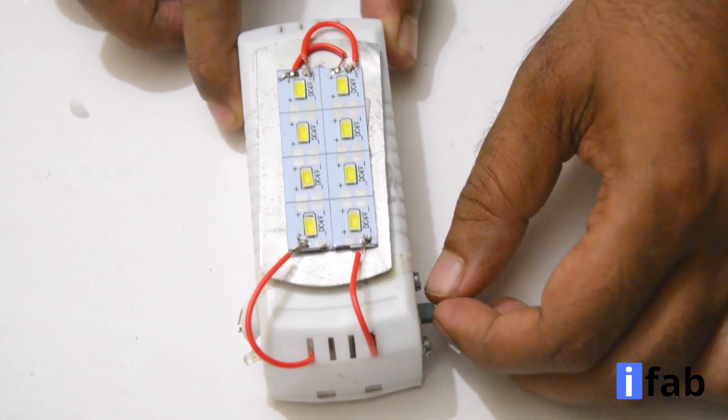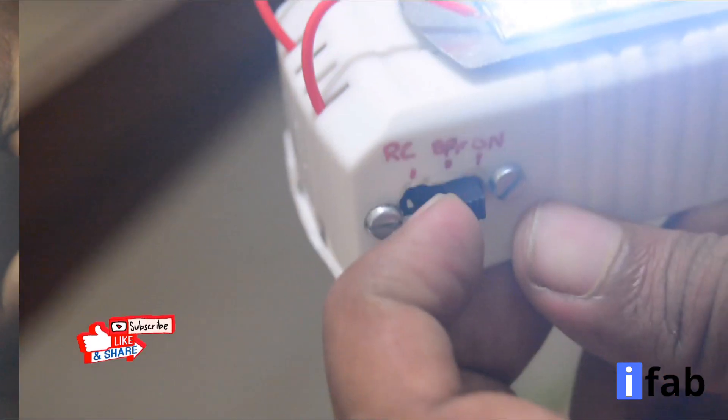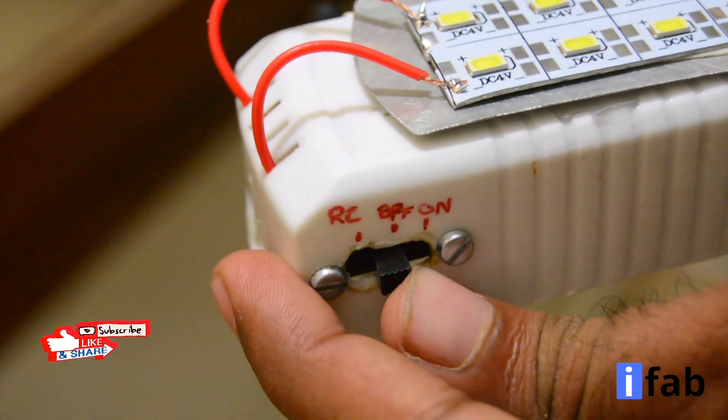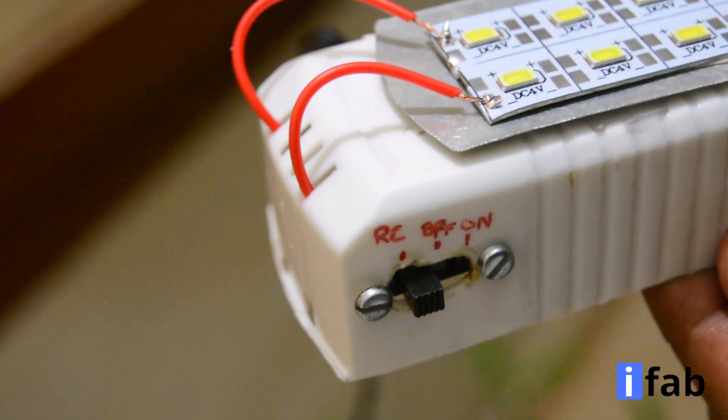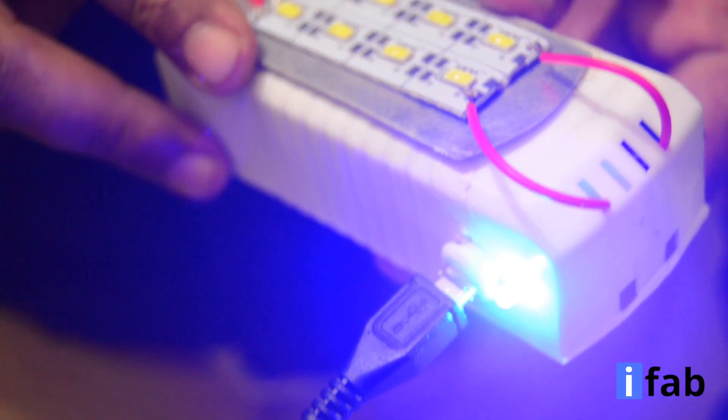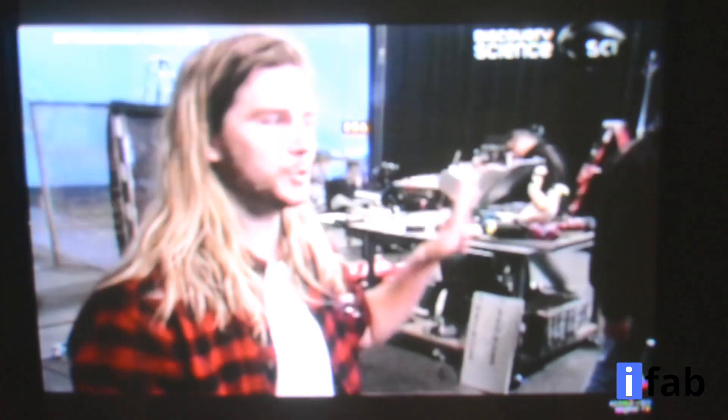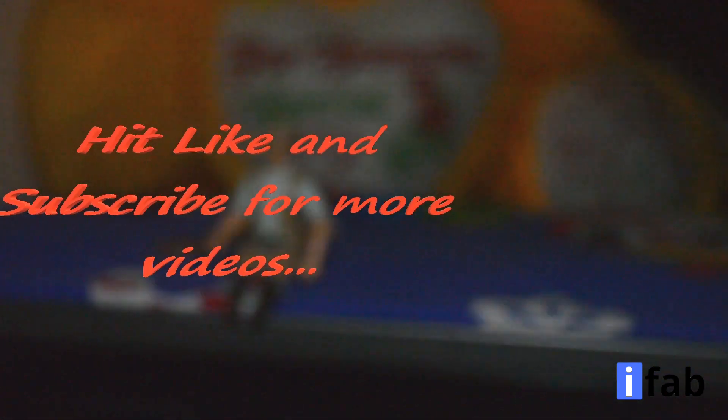Yes, finally we have made our own DIY emergency lamp. Let's see how you can use it. Now you can mark some labels like on, off and recharge. Now put your switch in recharge mode and connect your USB charger to the micro USB port and wait until the battery gets fully charged. Oh, current gone, no problem we have our emergency lamp.